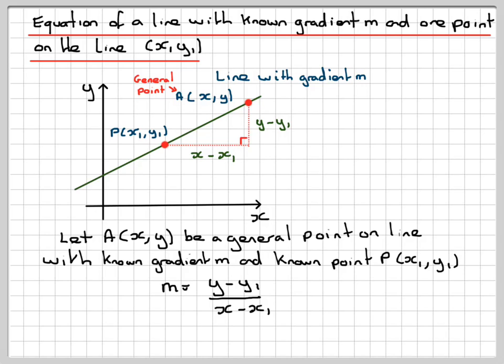And then the gradient will be equal to y minus y1, which is that distance, divided by that distance, which is x minus x1.